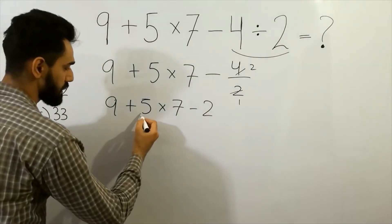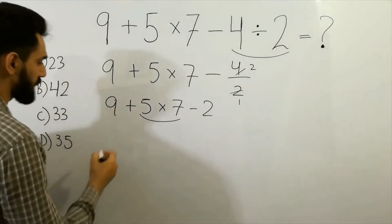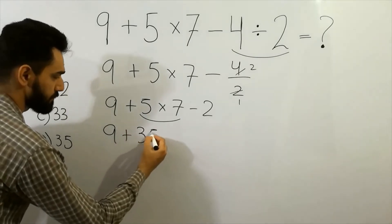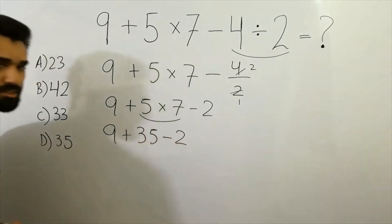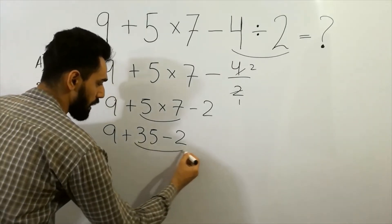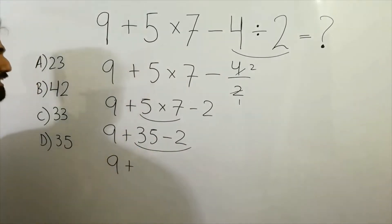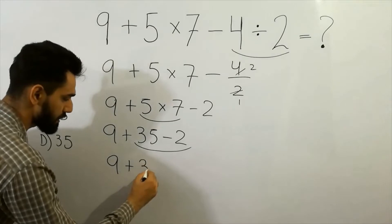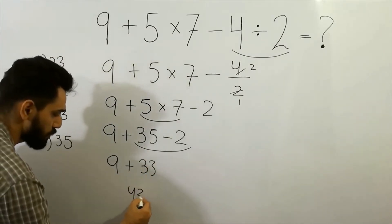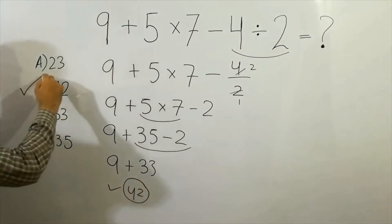The next step is multiplication after division. So nine plus five sevens are thirty-five, minus two. Next step: do the subtraction and addition. Nine plus thirty-five minus two gives us thirty-three, and after adding we get the answer forty-two. So forty-two is the correct answer — option B is correct.